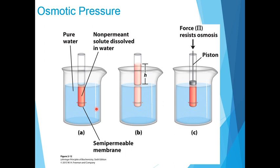Water flows from the beaker into the tube to equalize its concentration across the membrane, because water moves from higher concentration to lower concentration. When a solute is dissolved in water, the concentration of water decreases, which is why pure water can move into the tube where the concentration of water is lower.